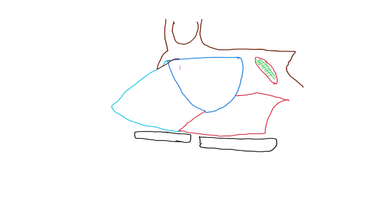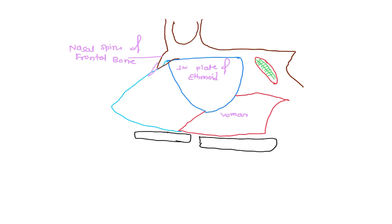Here we have the simplified diagram of our nasal septum. At the top we have the perpendicular plate of ethmoid, then just below it we have the vomer. Here we have the nasal spine of the frontal bone, and just below it we have the crest of nasal bone. Don't forget here we have the rostrum of sphenoid.